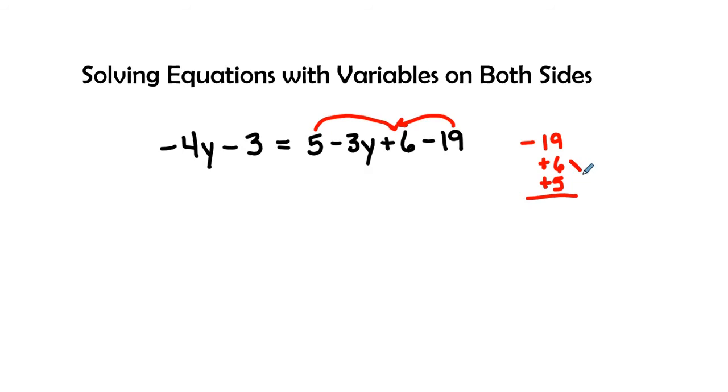Now this positive 6 and positive 5 equals a positive 11. So we have negative 19 and a positive 11 gives us a negative 8. So when we combine like terms we are going to have negative 3y minus 8.